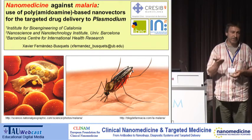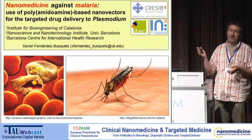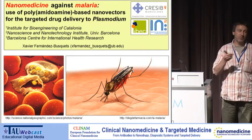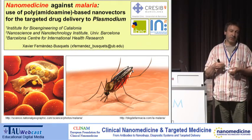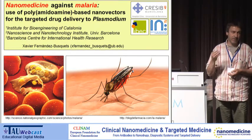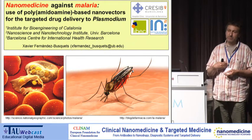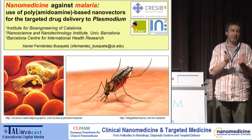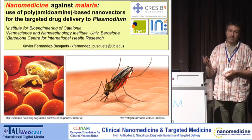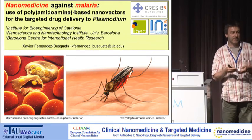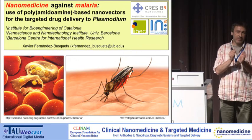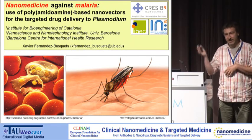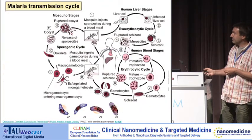We want to counter the perverse argument that nanomedicine is expensive and therefore cannot be applied to neglected diseases like malaria. In my opinion, there are two ways to counter that. One is that public agencies, private companies, and governments should do their job to ensure nanomedicine can be applied to diseases from developing countries. But what we as researchers can do is try to design nanomedicines that are both the best possible and the most cost-effective.